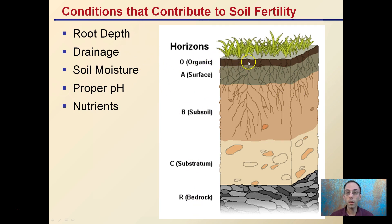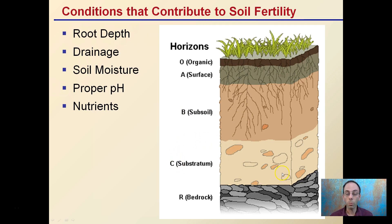The O, or organic horizon, is at the very top. A is very near the surface. The B is the subsoil, which is pretty much the extent to which the roots will reach. C, the substratum, is where roots are not going to reach. And then R is bedrock.